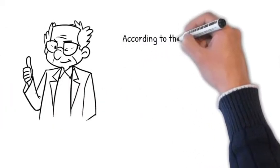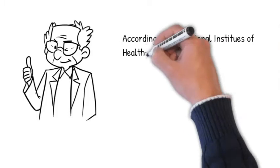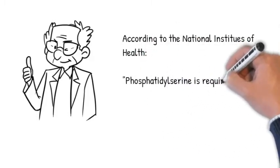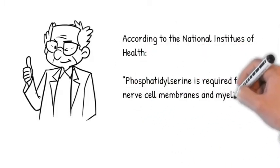According to the National Institutes of Health, phosphatidylserine is required for healthy nerve cells and membranes and myelin.